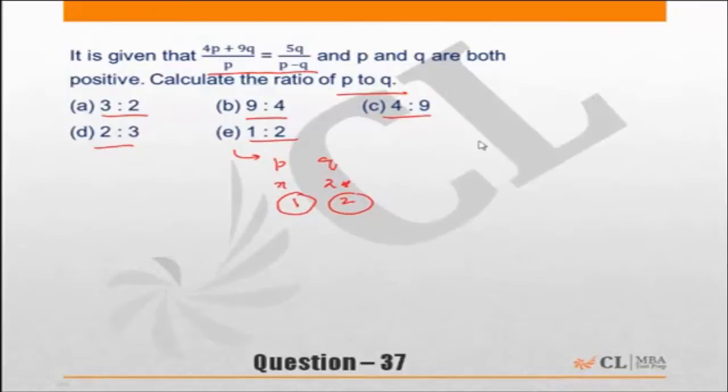So I will look at 4p plus 9q upon p, and on the right hand side we have 5q upon p minus q. Let's start substituting the choices. We'll start with choice e.